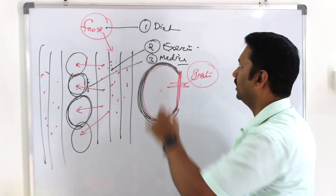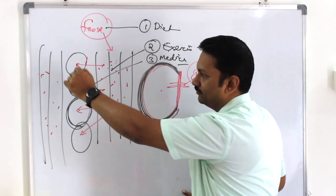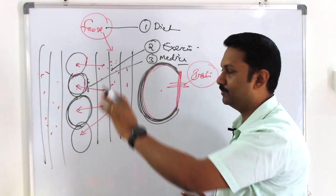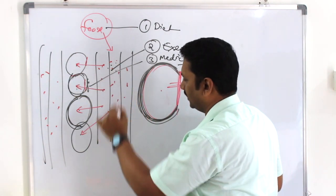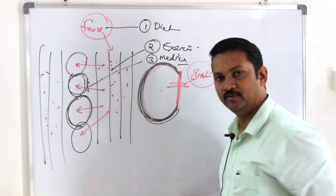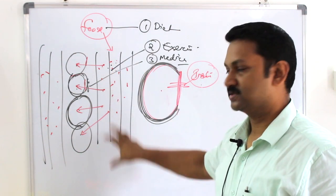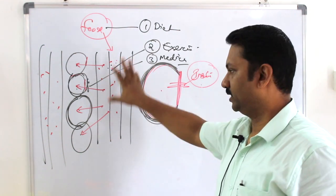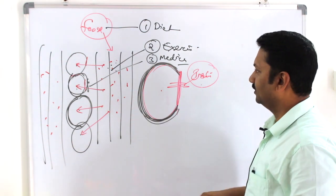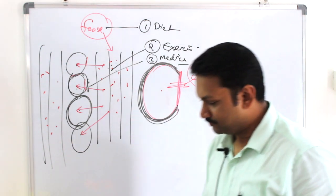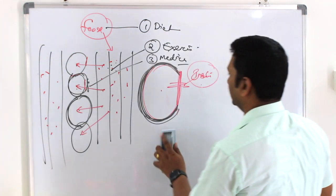We want to protect the cells of the blood so that the cells are not damaged. Exercise and food control help prevent microvascular and macrovascular complications. In detail, management of diabetes is very simple.